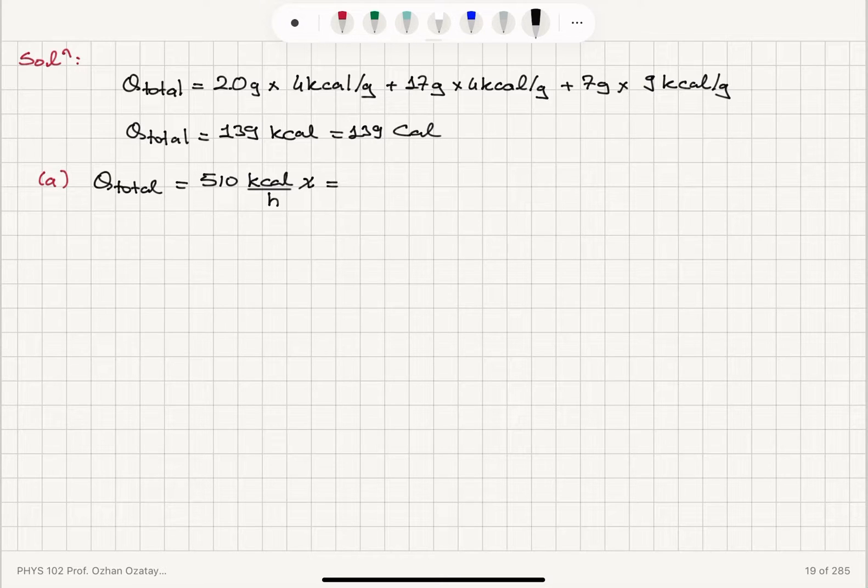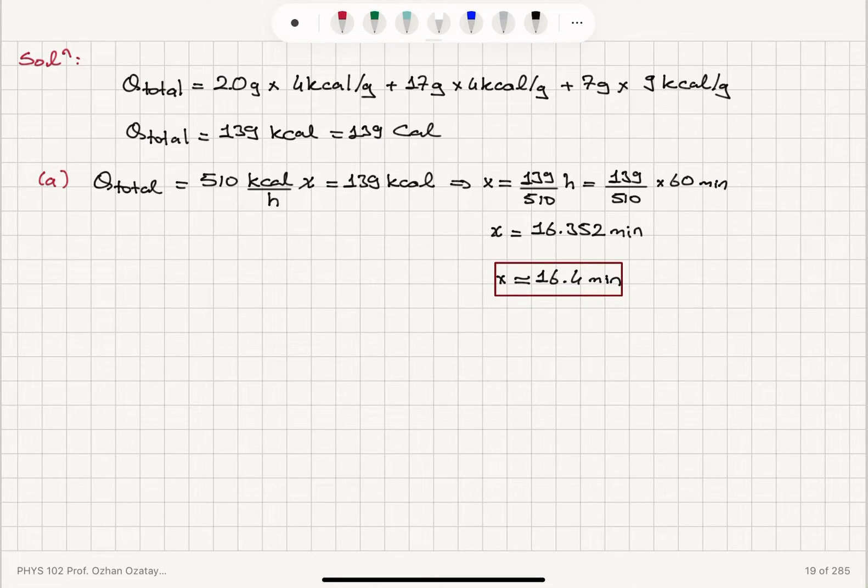Times X equals 139 kilocalories. We obtain X to be 139 divided by 510 times 60 minutes, which gives us X equals 16.352 minutes, which can be rounded to 16.4 minutes. So we have to do 16.4 minutes of exercise to work off one donut.